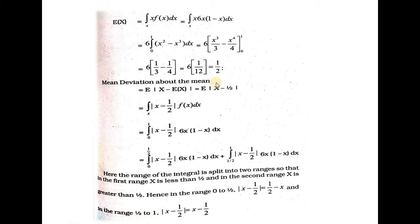This integral of mod x minus 1 by 2 times f of x dx runs from 0 to 1. We split it into two parts: 0 to 1 by 2, and 1 by 2 to 1. So the expression becomes the integral from 0 to 1 by 2 of mod x minus 1 by 2 times 6x(1 minus x) dx, plus the integral from 1 by 2 to 1 of mod x minus 1 by 2 times 6x(1 minus x) dx.